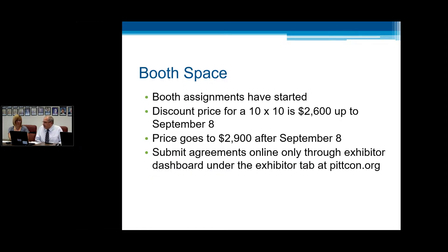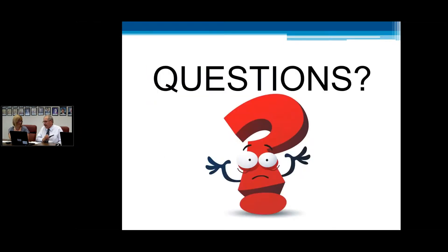Booth space — the booth assignments have started. The discount price expires September 8th: a 10-by-10 booth is $2,600. After September 8th, it will increase to $2,900. The submission agreements are available online through the exhibitor dashboard. Tammy will explain a little bit later about the dashboard and how you can approach that. Before I hand it over to Tammy, I'll open it up to any questions.